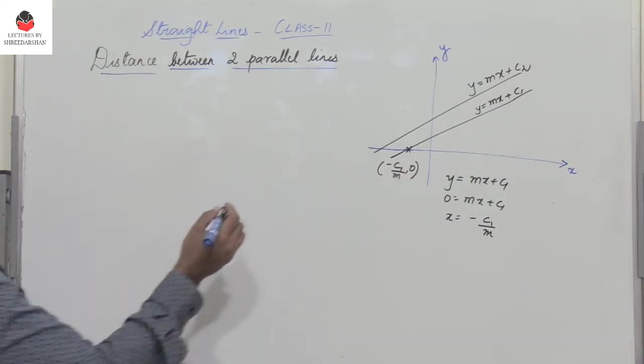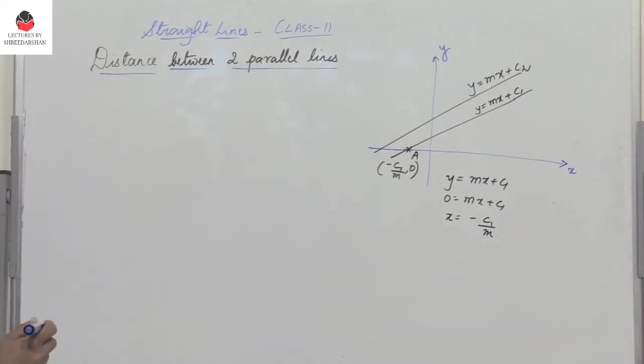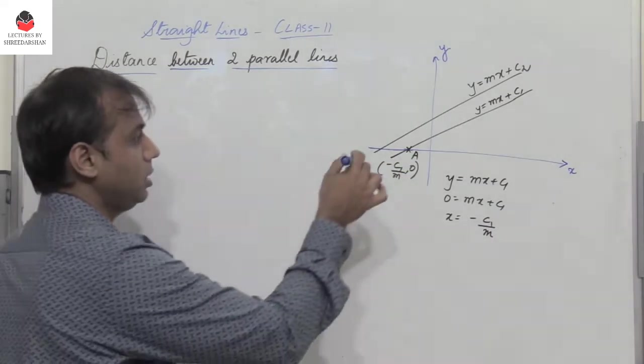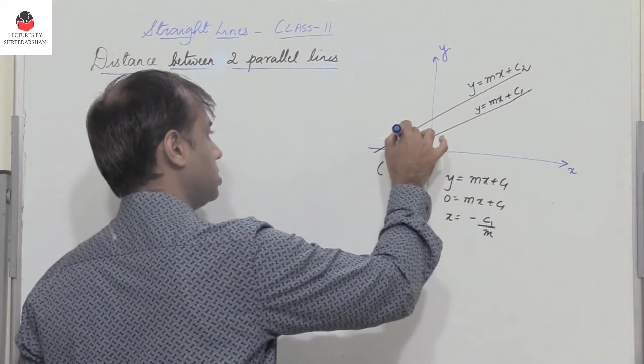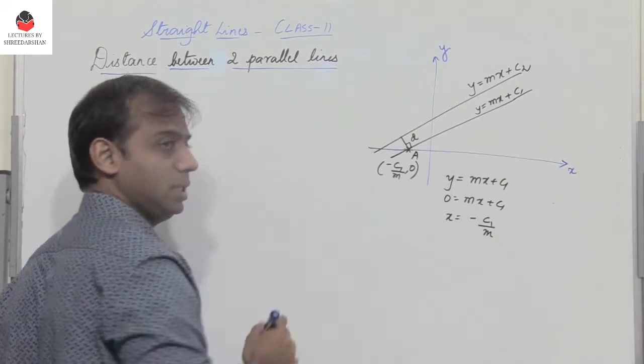So let this point be point A, and I need to find the perpendicular distance between these two lines. So let me consider the perpendicular distance. Let the distance be d.